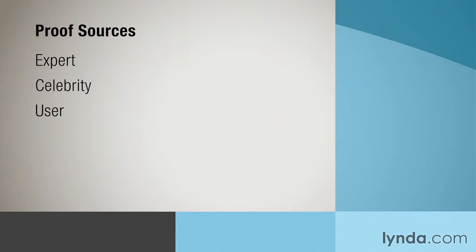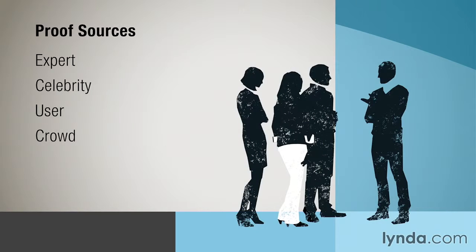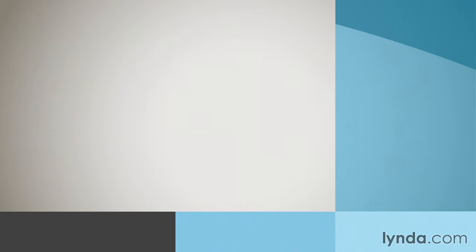The fourth proof source at our disposal is the wisdom of the crowd. This proof source is like the user proof source, but supercharged. Rather than a specific user experience, wisdom of the crowd taps into our deep desire to be a part of something big, as well as our fear of missing out. This proof source uses the mass effect to influence. You know, if billions of people have eaten at McDonald's, then it must be good. If 30,000 people have joined a service, it must work. Volume of customers does equate to credibility in our subconscious minds.